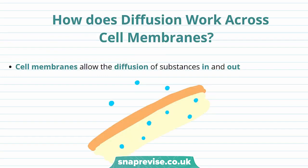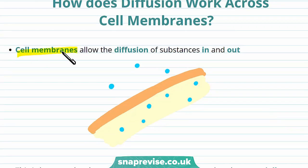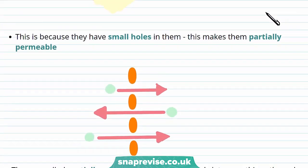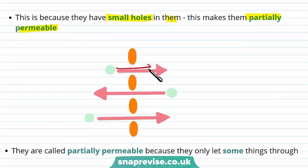Now we know the mechanism of diffusion, but why is it biologically relevant? Well, diffusion can work across cell membranes. Cell membranes allow the diffusion of substances in and out — substances that the cell needs can diffuse in, and substances it doesn't need can diffuse out. However, cell membranes actually have small holes in them, which makes them partially permeable. These small holes allow substances to go into and out of the cell.